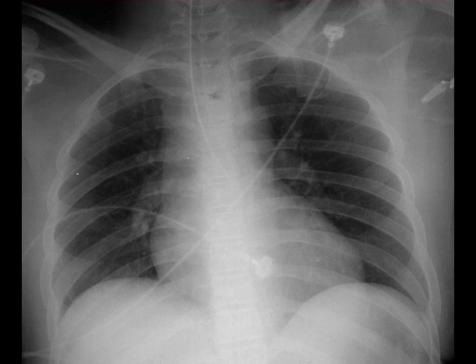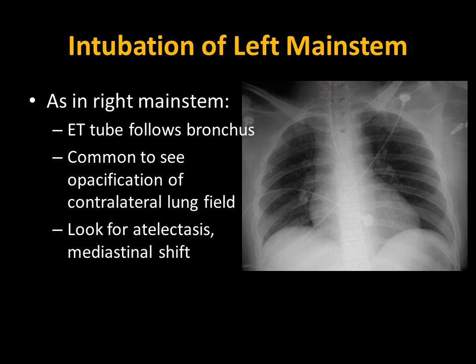Our third case is a 35-year-old female with no further history provided. We see an ET tube with a radio-dense stripe, this time with a curve to the left. Without any of the other signs of esophageal intubation, this is concerning for a left main stem bronchus intubation. This case is presented to recognize that a left main stem bronchus intubation is possible, while the right main stem bronchus intubation may be more likely.